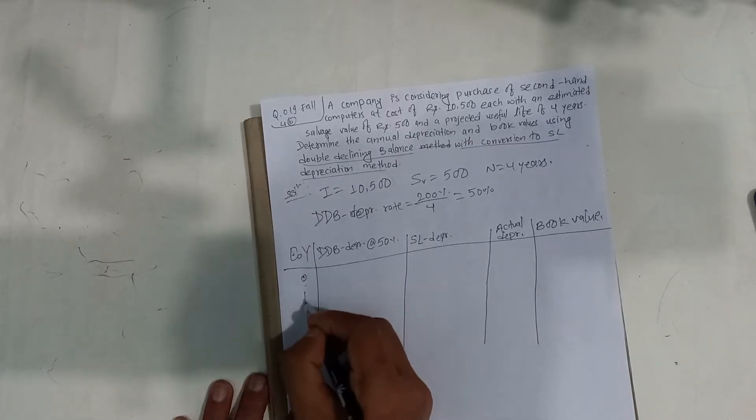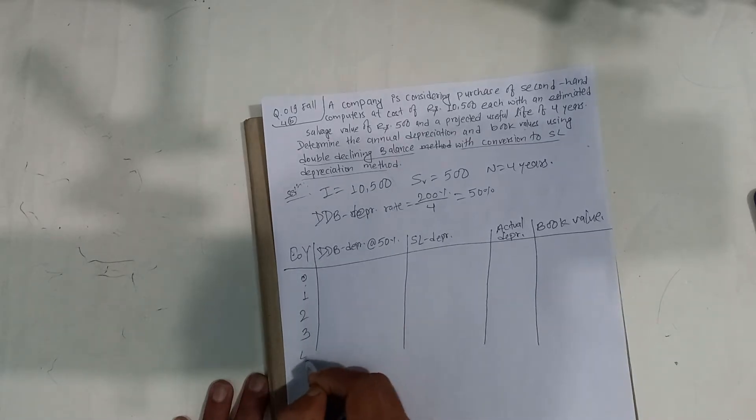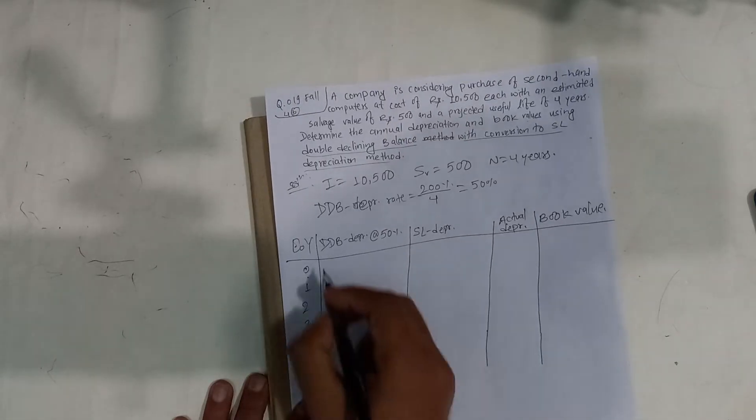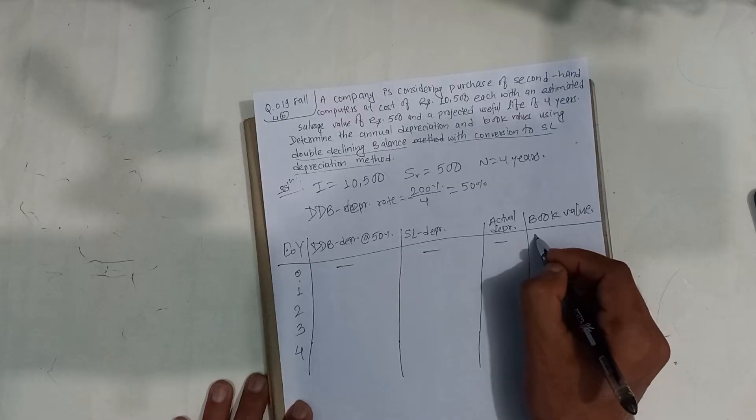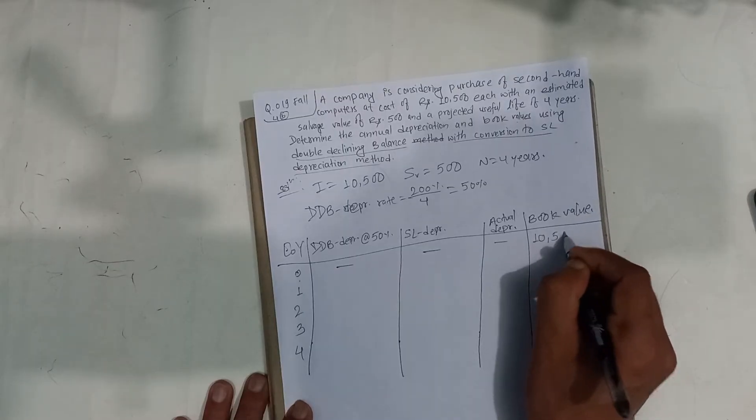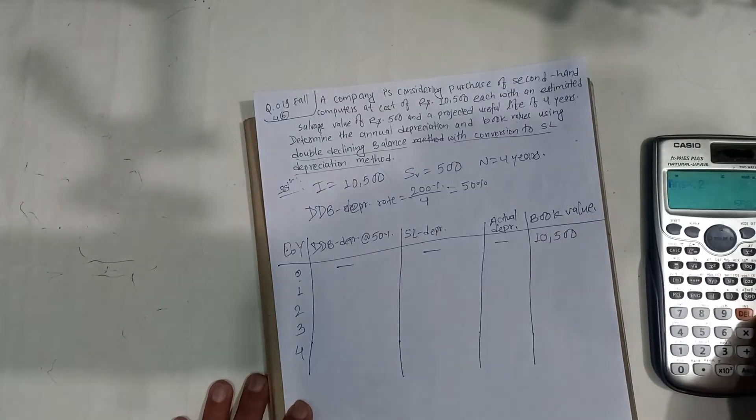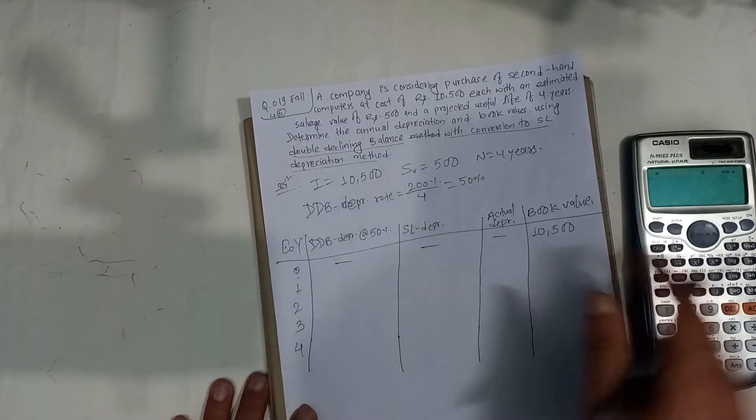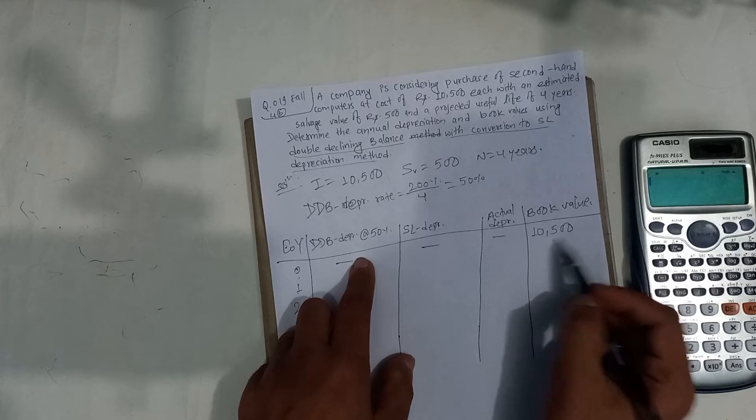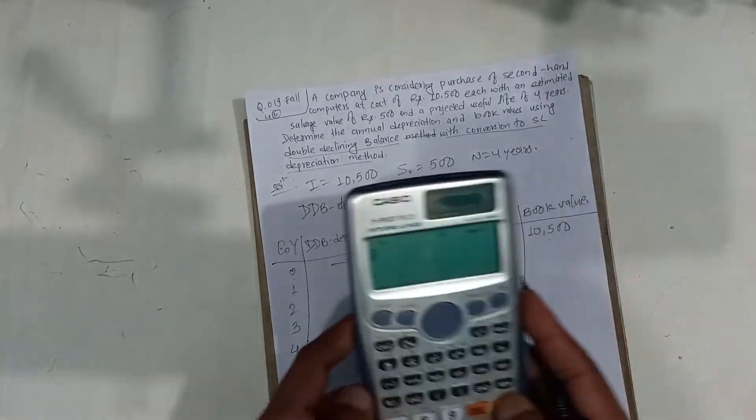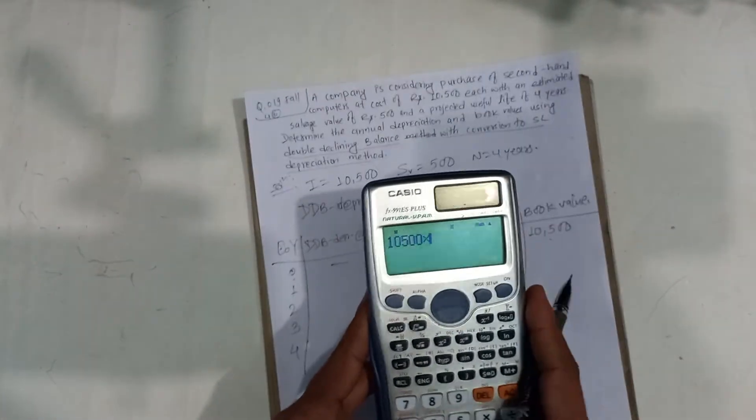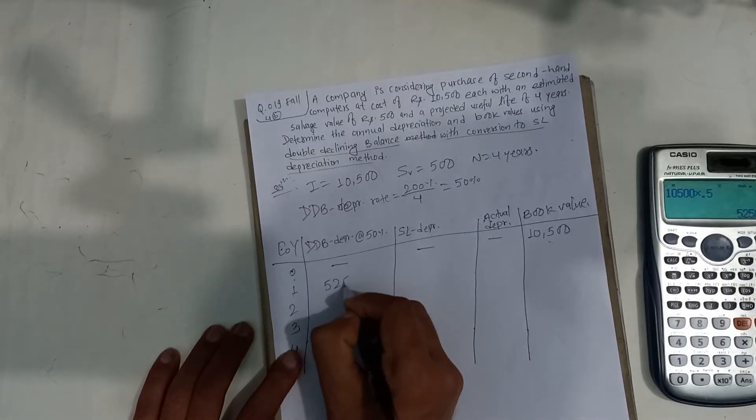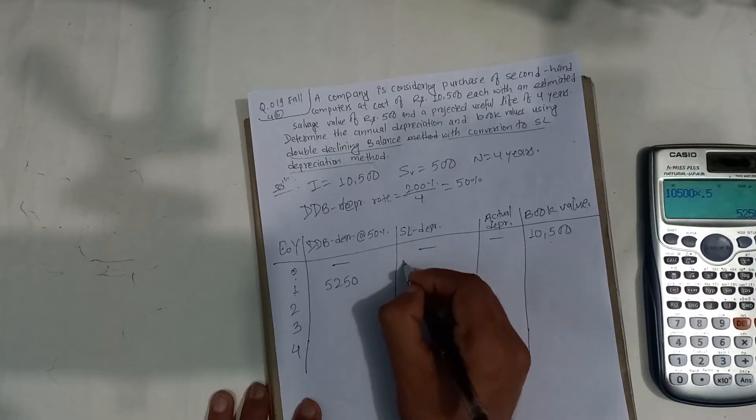First, initially the book value is 10,500. First year, the DDB depreciation is 50% of this. Let's do this: 10,500 times 50% equals 5,250.